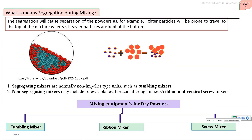What is meant by segregation during the mixing operation? Segregation occurs in different ways. During mixing, if particle size differs with free flowing property, the ingredient with a smaller particle size mostly retains at the bottom, and the medium or largest size particles retain at the top.